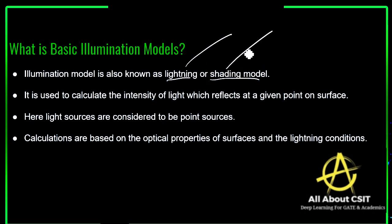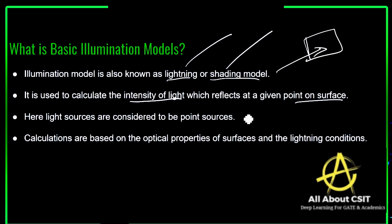The illumination model mainly concentrates on the way light is reflected and the way the model appears. It is used to calculate the intensity of light which reflects at a given point on a surface. So when light is incident on a surface, illumination models are used to calculate the intensity of light which reflects at a given point of that surface.